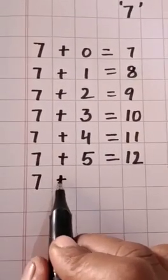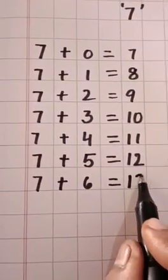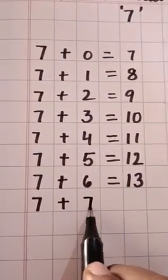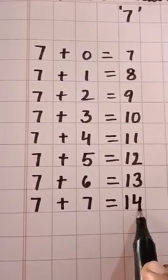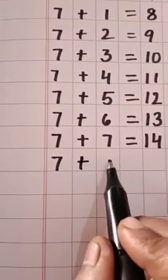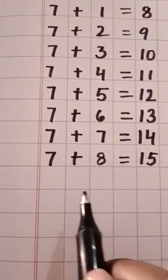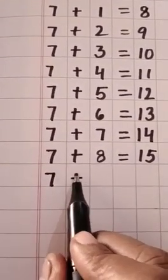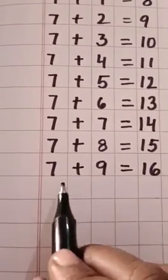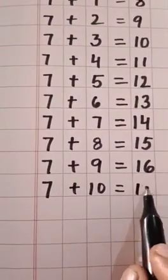7 plus 6 equal to 13. 7 plus 7 equal to 14. 7 plus 8 equal to 15. 7 plus 9 equal to 16. 7 plus 10 equal to 17.